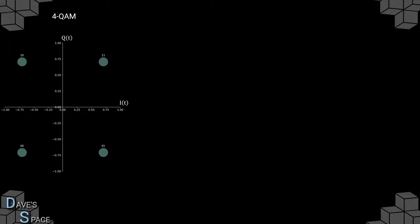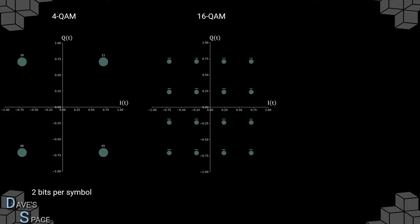The advantage of QAM is that we can pack more states into our constellation diagram. Rather than just having two bits per symbol, we could move to a higher level QAM such as 16-QAM. In this case, it's possible to fit four bits per symbol — a total of 16 states. For the I(t) channel, we have four states around −0.75, −0.25, 0.25, and 0.75. Likewise for the Q(t) channel. By choosing unique combinations of the amplitude of I(t) and Q(t), we can select different symbols, giving us four bits per symbol.